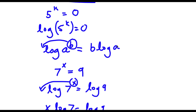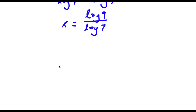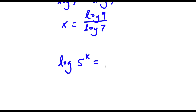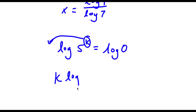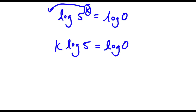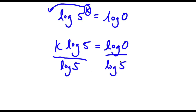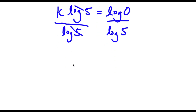Going back to our problem, we had log 5 to the power of k is equal to log 0. Now we can move this exponent k to the front. So now I have k times log 5 is equal to log 0. We're solving for k, so I'm going to divide both sides by log 5. These two cancel out and I'll be left with k is equal to log 0 over log 5.